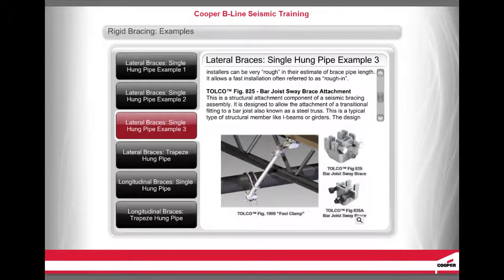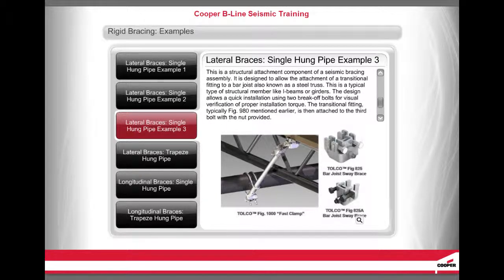The Tolco Figure 825 Bar Joist Sway Brace Attachment is a structural attachment component designed to allow the attachment of a transitional fitting to a bar joist, also known as a steel truss — a typical structural member like I-beams or girders. The design allows quick installation using two break-off bolts for visual verification of proper installation torque. The transitional fitting, typically Figure 980, is then attached to the third bolt with a nut provided.